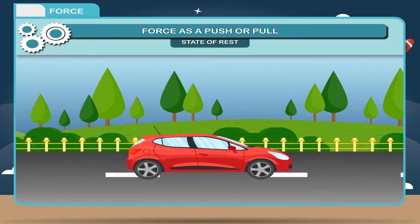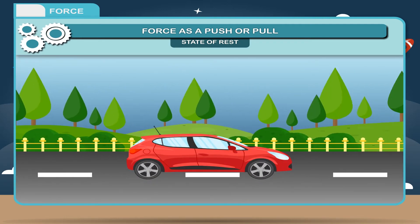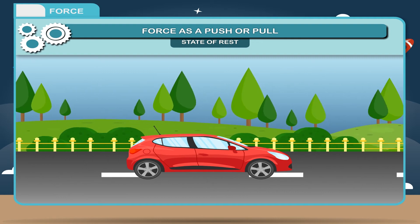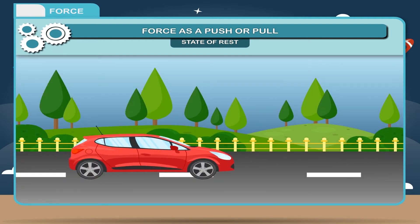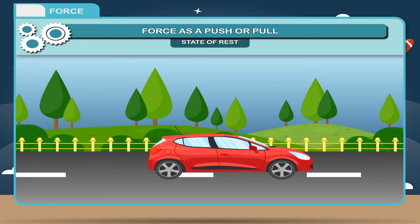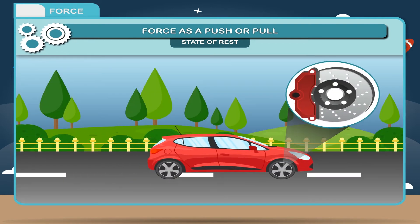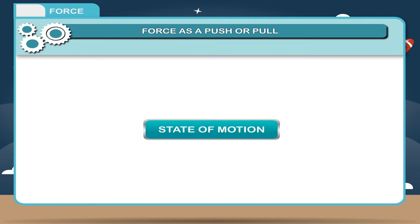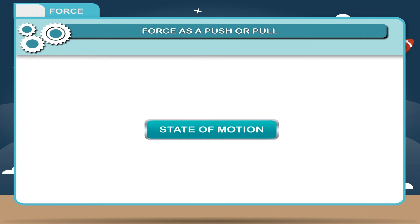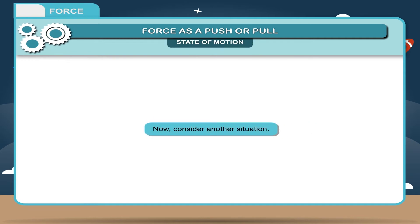A car moves on a road uniformly. When brakes are applied, it stops. In this case, due to the effort of brakes, the car comes to a stop.